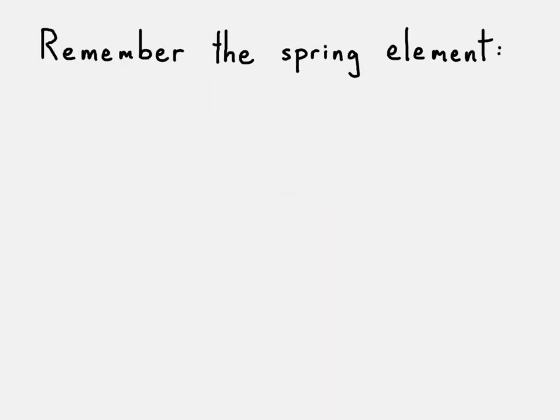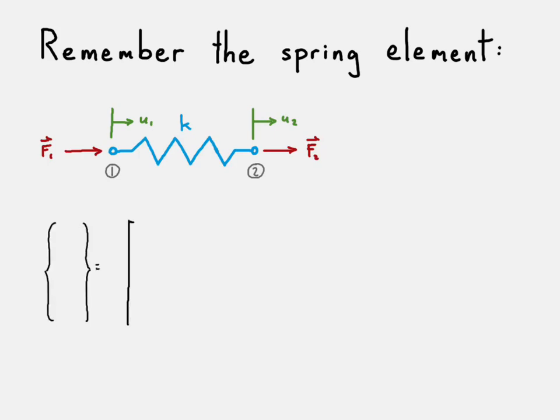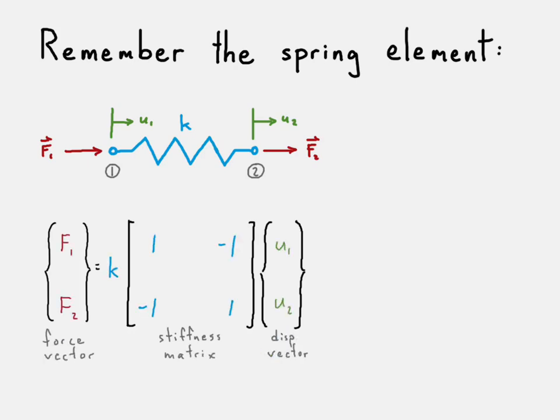First, we want to remember the spring element. The spring element is going to be very similar to the truss element. Here we have our stiffness, K. We have our forces and our displacements at each node. Remember that we have this elemental stiffness matrix for the spring element that relates our displacements with our forces at each node.